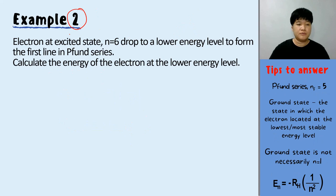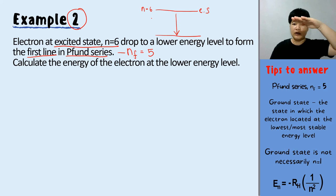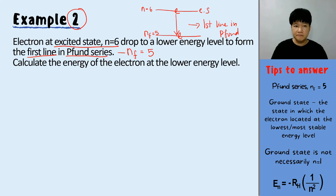Let's try another example. An electron is at excited state N equals 6 and drops to a lower energy level to form the first line in the Pfund series. The Pfund series means N final must be 5. So the electron drops from N equals 6 to N equals 5, forming the first line in the Pfund series. The question asks to calculate the energy of the electron at the lower energy level, which is N equals 5.